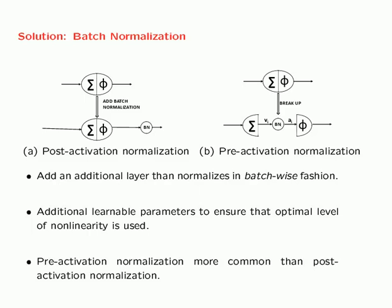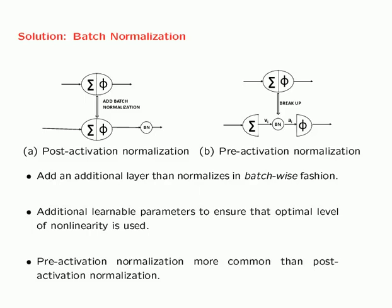These batch normalization nodes contain additional learnable parameters — they don't just perform normalization; certain aspects of normalization can also be learned. In the figure on the right, the input to the batch normalization node is Vᵢ, which is the output of the linear layer, and the output is Aᵢ. We will now see how these Vᵢ's and Aᵢ's are created.